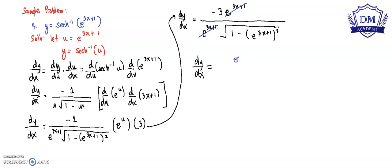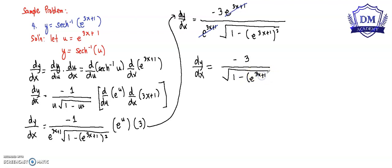So our final answer is dy over dx is equal to negative 3 all over the square root of 1 minus the quantity of e raised to 3x plus 1 squared. This is our answer.